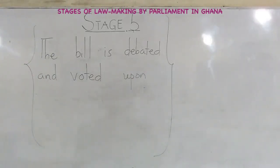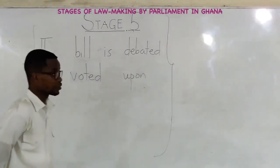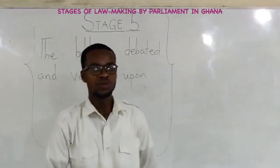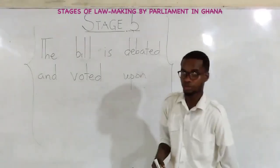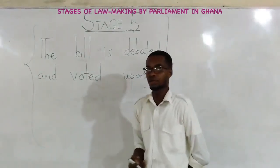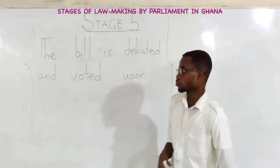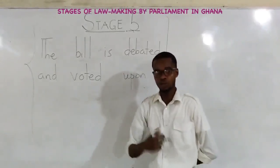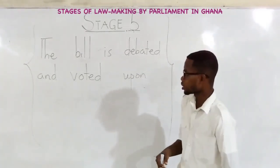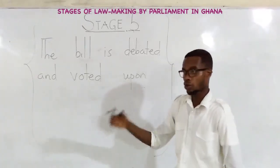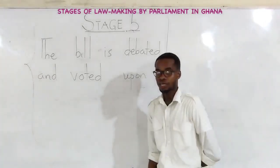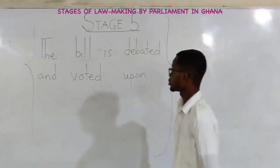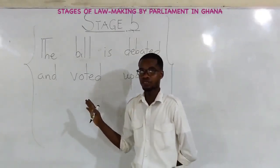Under stage five, the bill is debated and voted upon. Members of parliament have a formal discussion — they put their arguments across about what they have read or heard so far and what they think about it. They debate whether to continue the process or end it there. All of them will put their views across, and then they will be given the chance to vote either yes or no. That is what happens at stage five, after stage four where the motion was read the second time before the house.